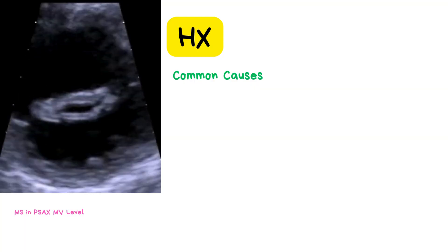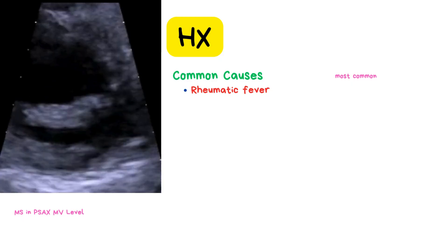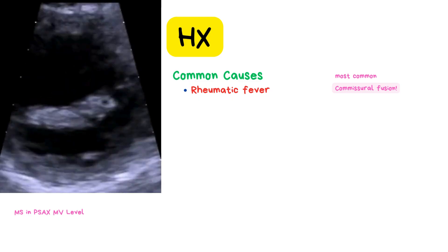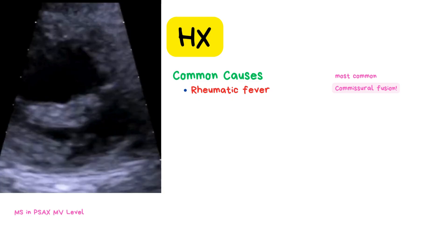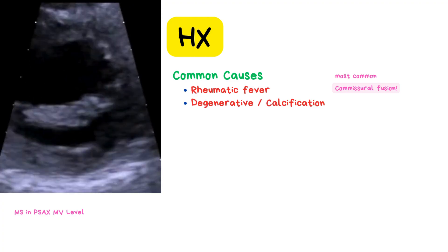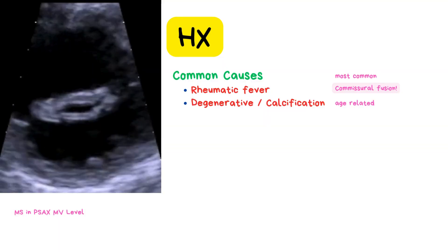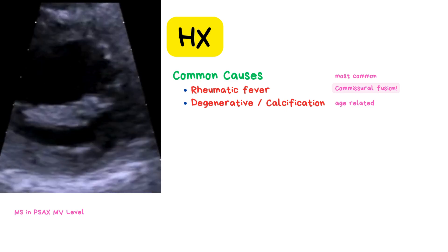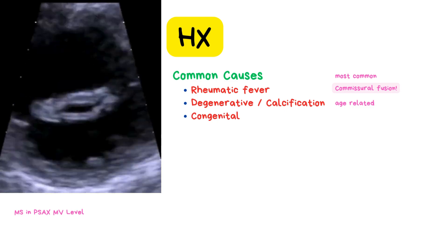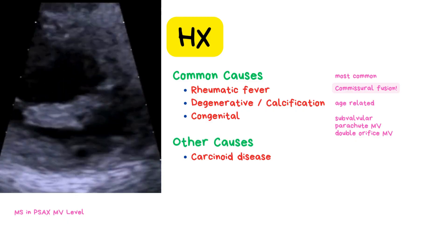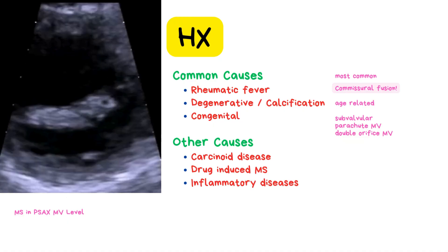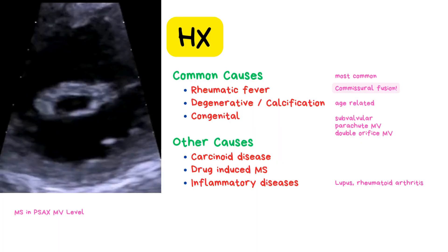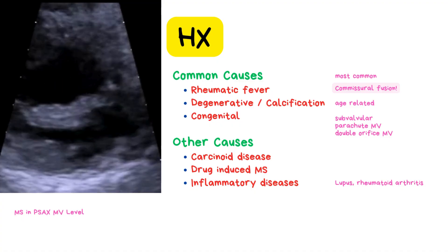Let's talk about what causes mitral stenosis, because understanding the why behind the narrowing helps us better interpret what we see on ECHO. The most common cause worldwide is rheumatic fever — a post-inflammatory condition that leads to commissural fusion, meaning the edges of the valve leaflets where they open are stuck together. Degenerative or calcific mitral stenosis is more common in older adults and typically involves calcification of the mitral annulus, making the valve stiff and less mobile. Other less frequent causes include congenital MS, secondary forms like carcinoid heart disease, drug-induced valve thickening, and systemic inflammatory diseases like lupus or rheumatoid arthritis.